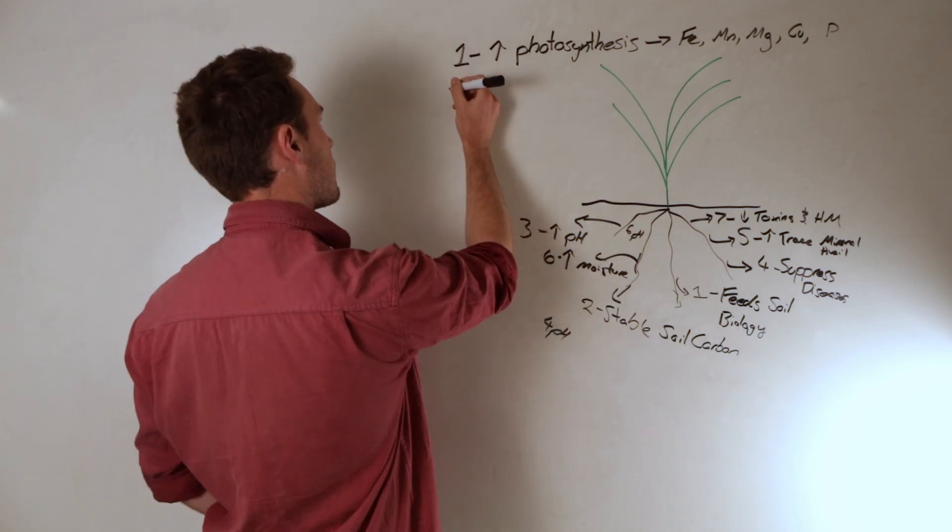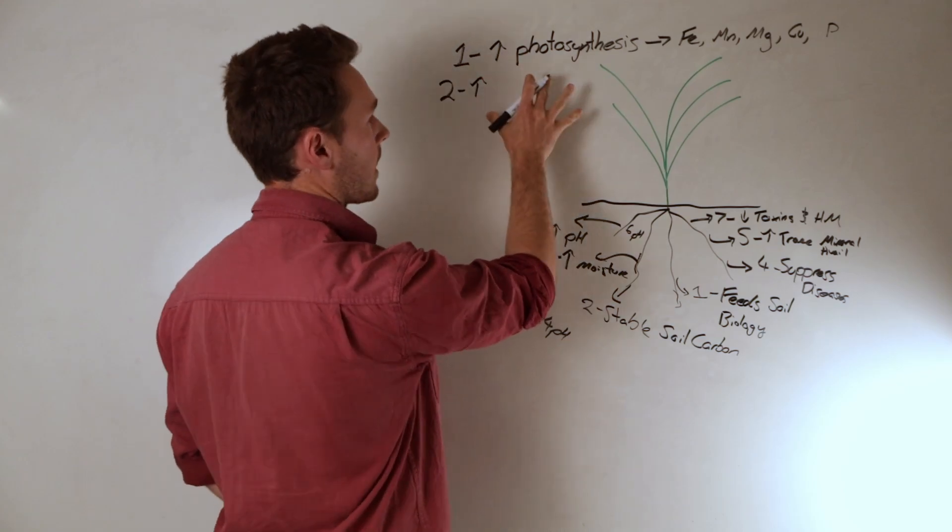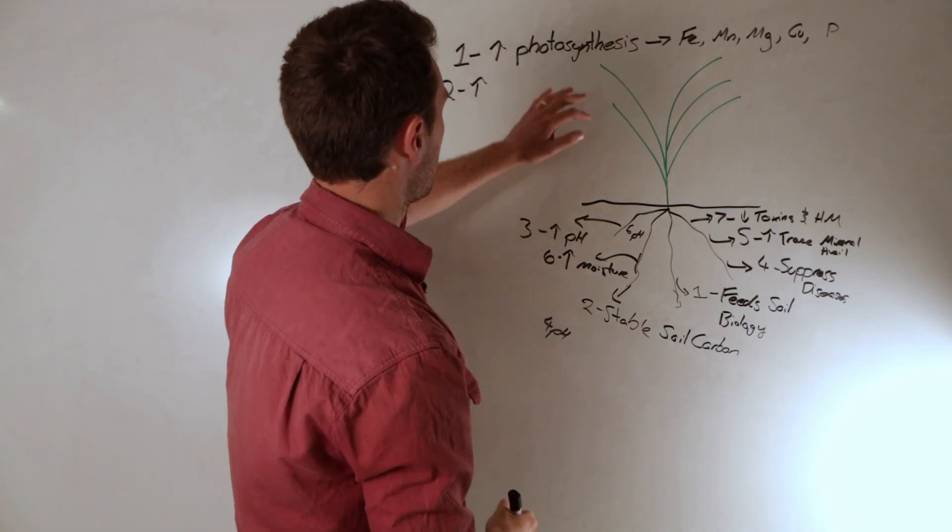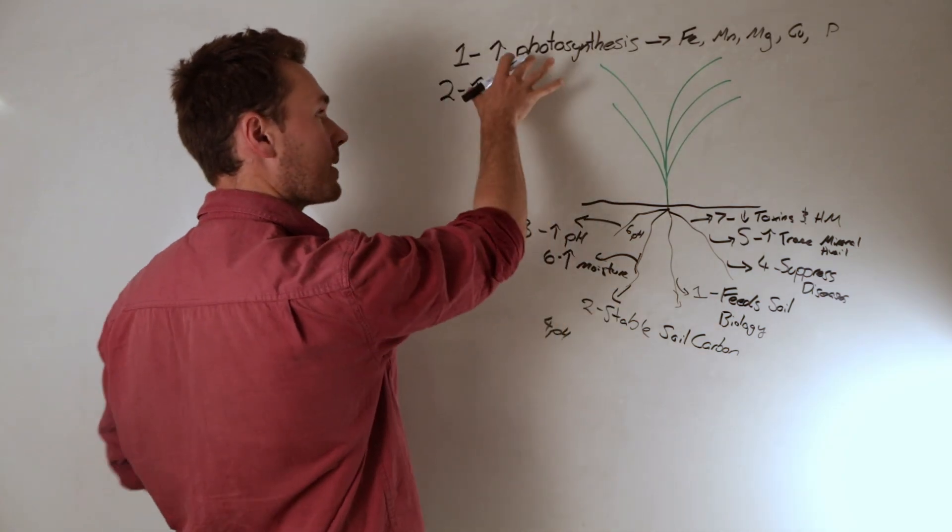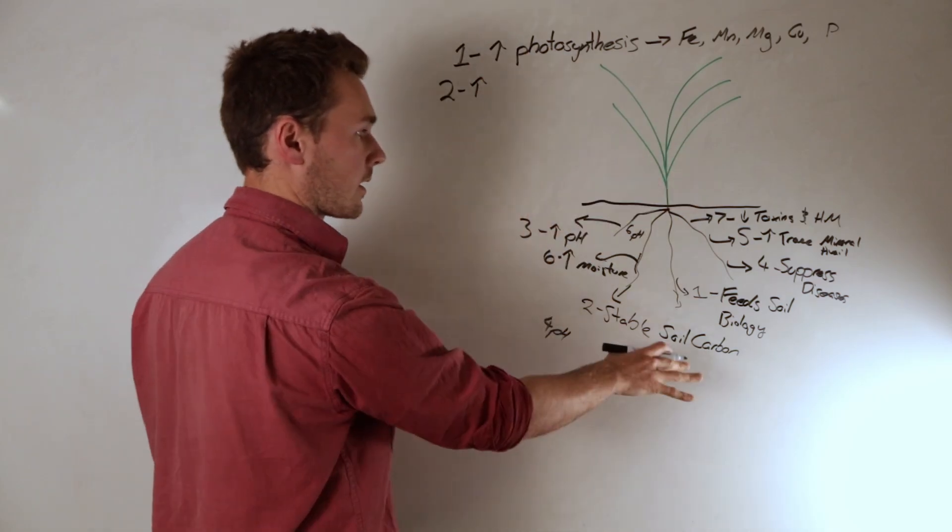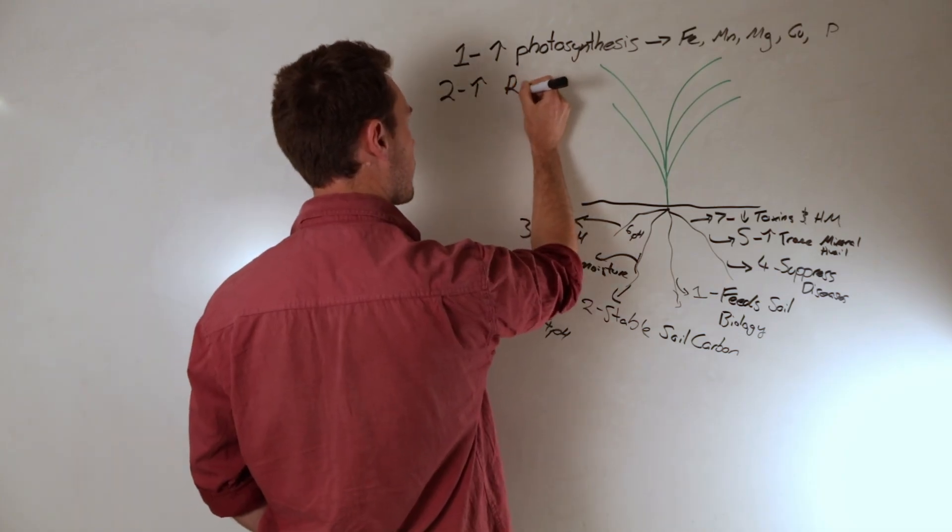Once we've done that we want to increase the amount of photosynthates that gets put into root exudates. It's all well to have a lot of photosynthates but if these are being used up for nitrogen conversion then we're not pushing a lot into our roots. So then we want to increase the root exudates.